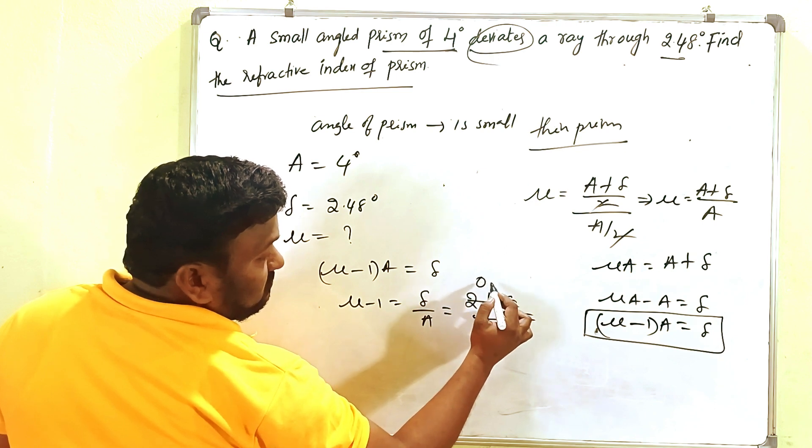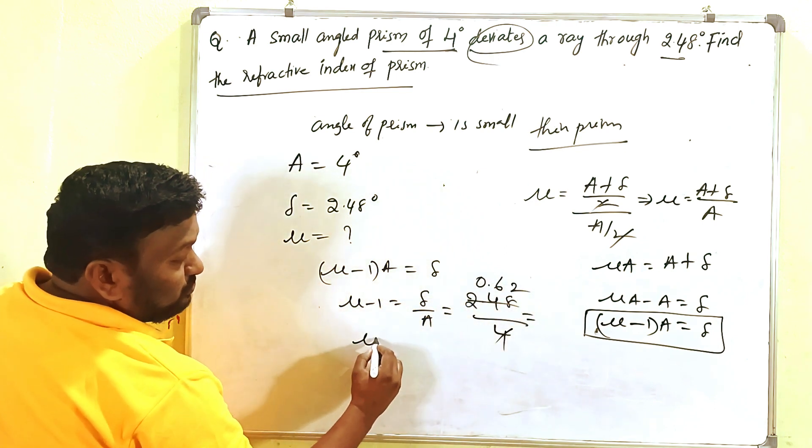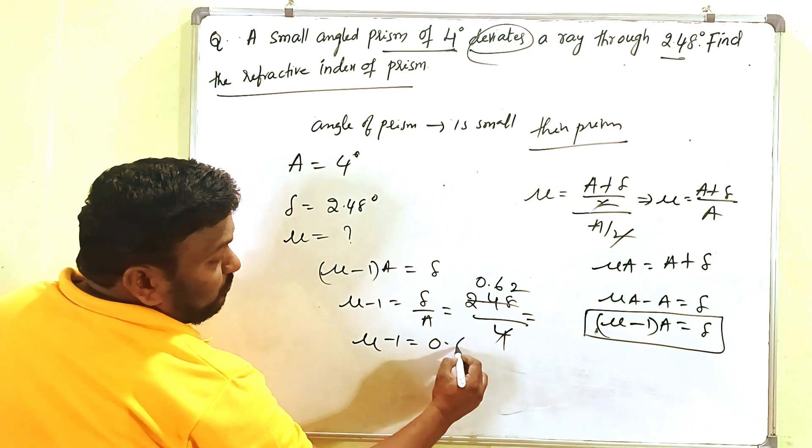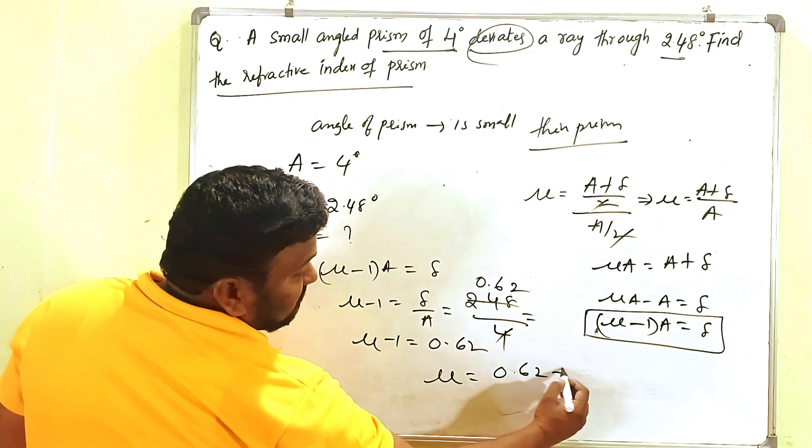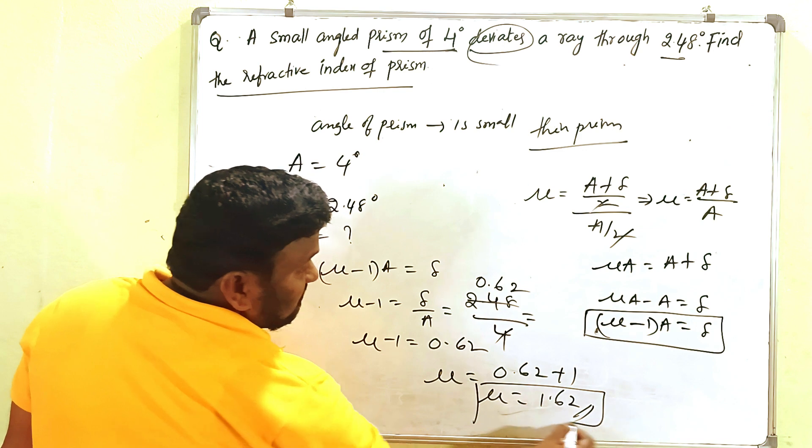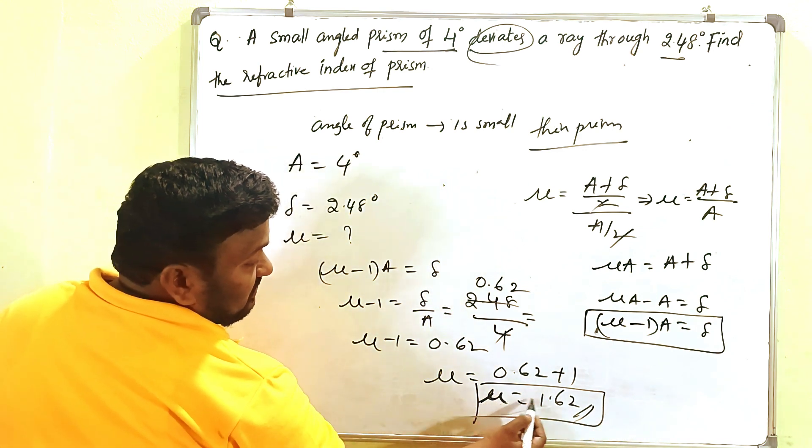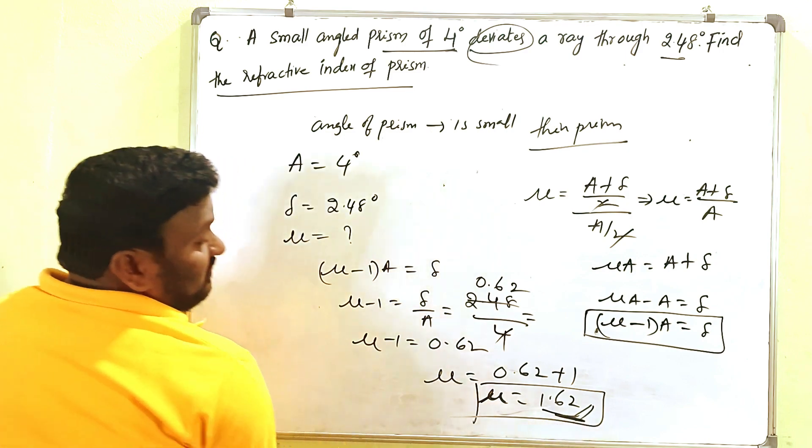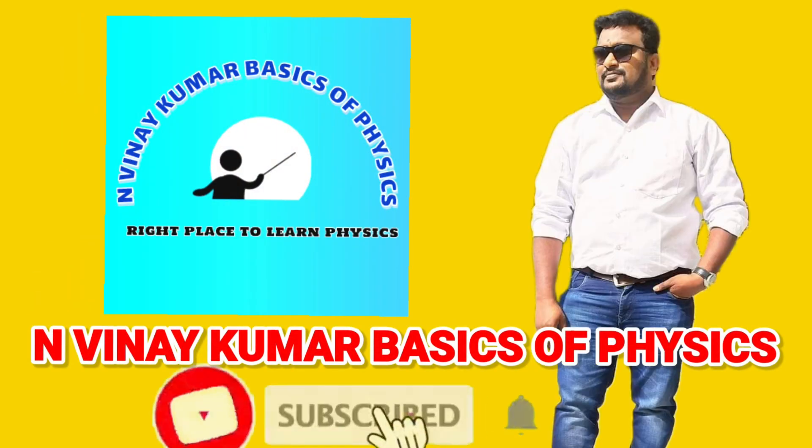Four cancels, giving 0.62. So mu minus 1 equals 0.62. Then mu equals 0.62 plus 1, which gives mu equals 1.62. So the refractive index is 1.62.